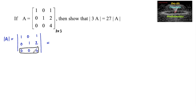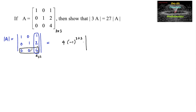The third row or first column has two zeros, so I'll expand along that. Considering the element 4 in the third row, third column: it is 4 times (−1)^(3+3) times the determinant of its submatrix, obtained by deleting that row and column. The submatrix is [1 0; 0 1].